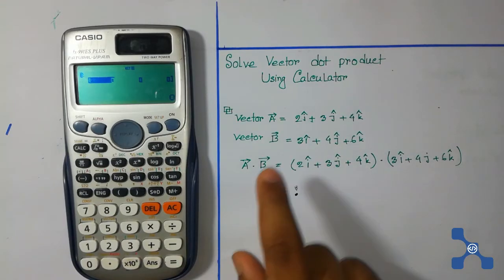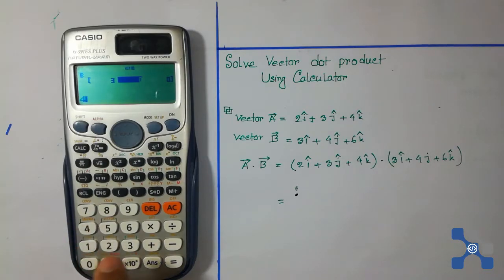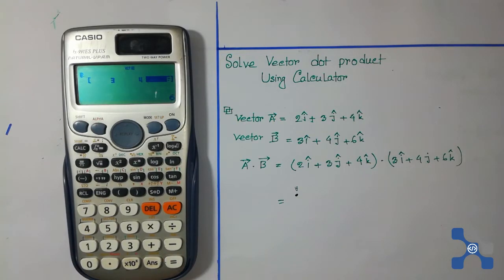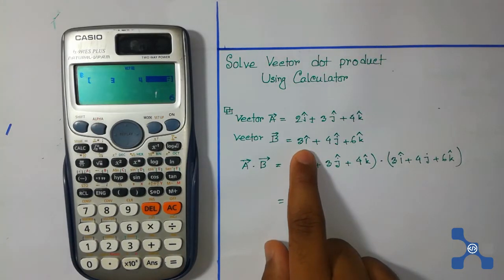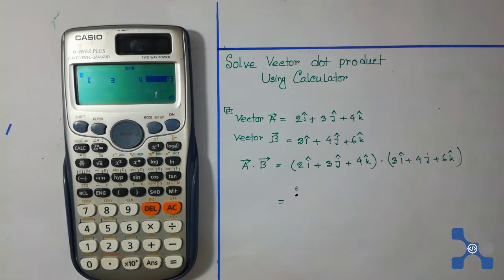Now enter the coefficients of I, J, and K for vector B. The coefficient of I is 3, so press 3 and then press equal. The coefficient of J is 4, then press equal. Then press the AC button to finish loading vector B.